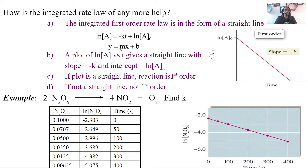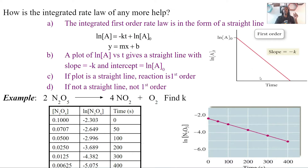Our slope m is the rate constant k, and the y-intercept — relating it back to the rate law — is the natural log of the initial concentration, ln[A]₀. If we plot this line, you should always expect to see it going downward, because the slope is negative k. A negative slope is always the case for all first order reactions. If it's not negative, then you don't have a first order reaction.